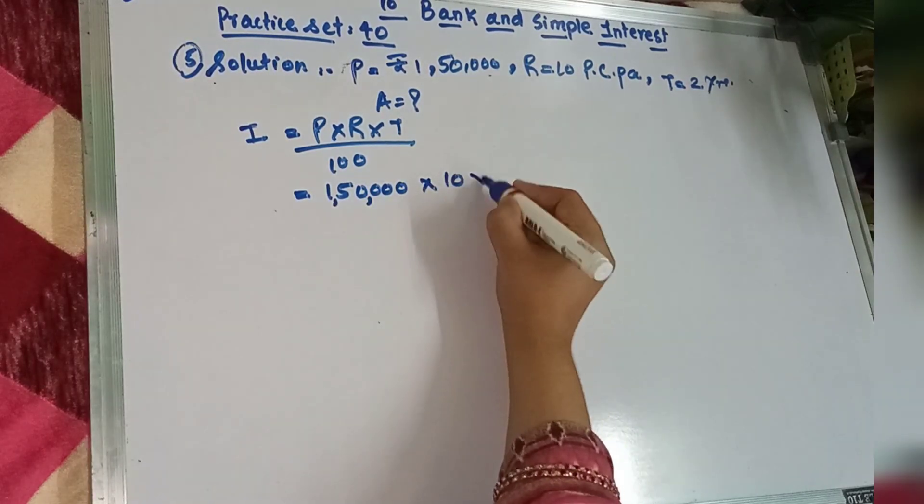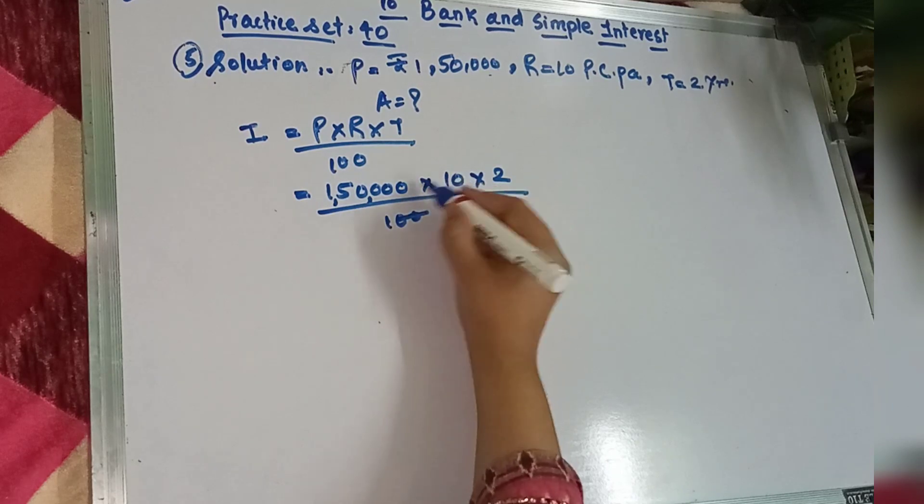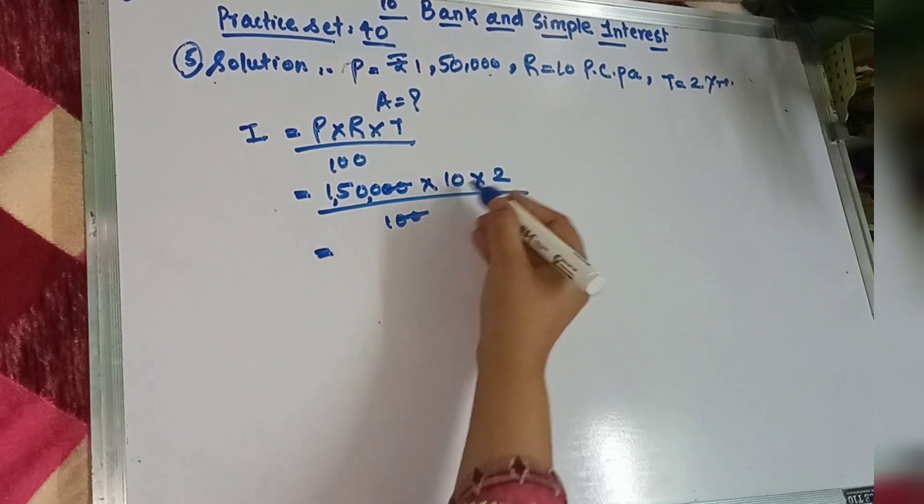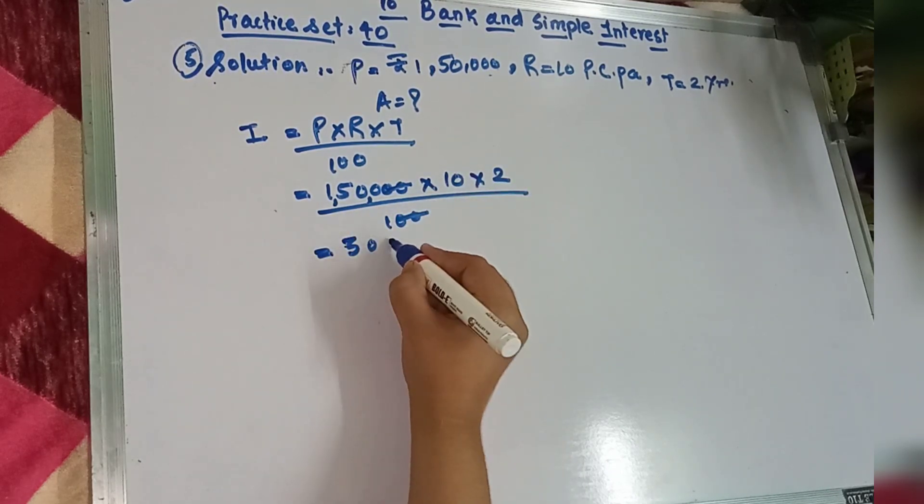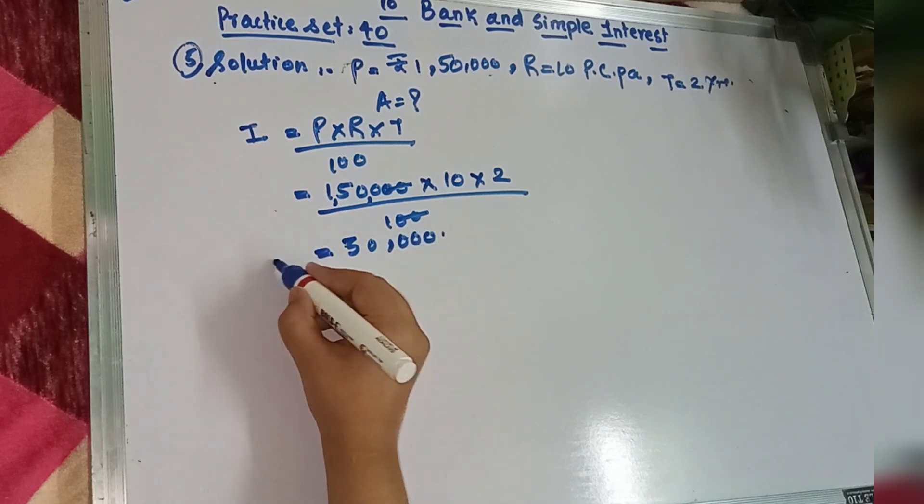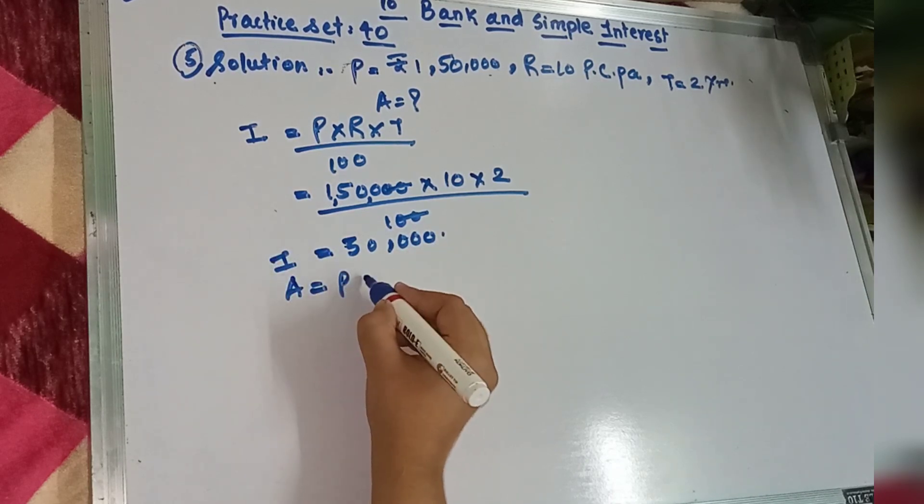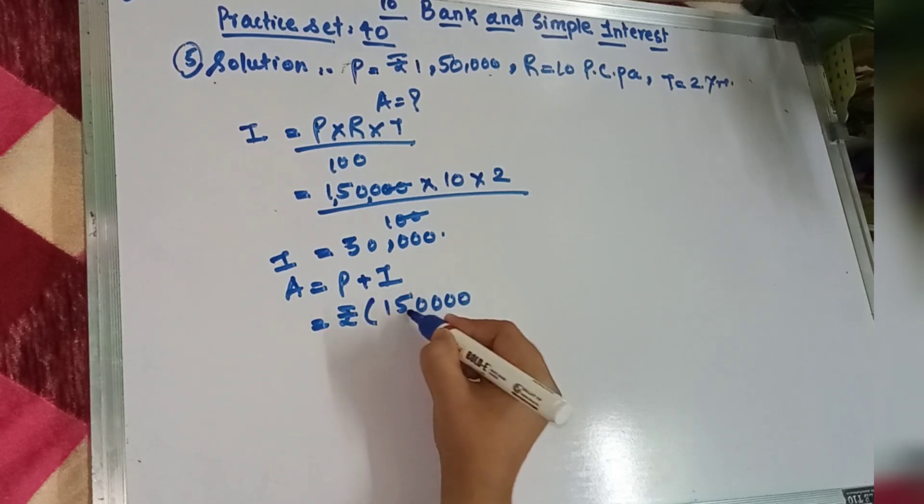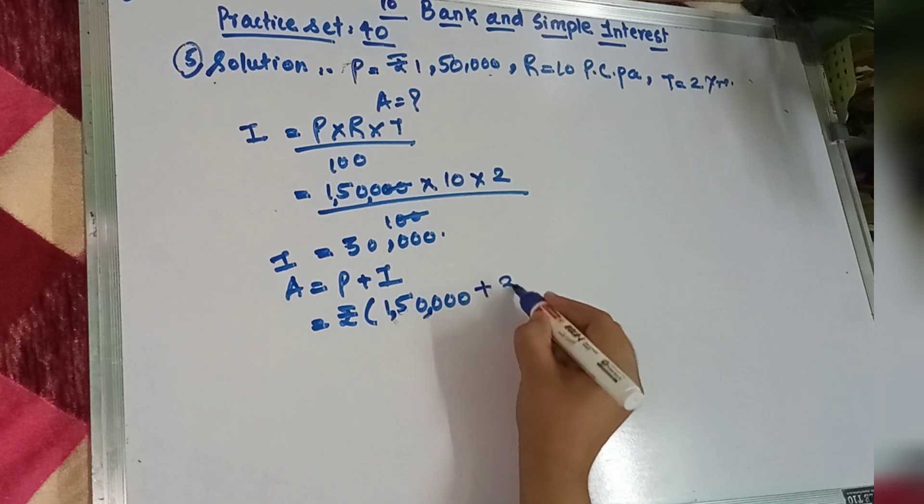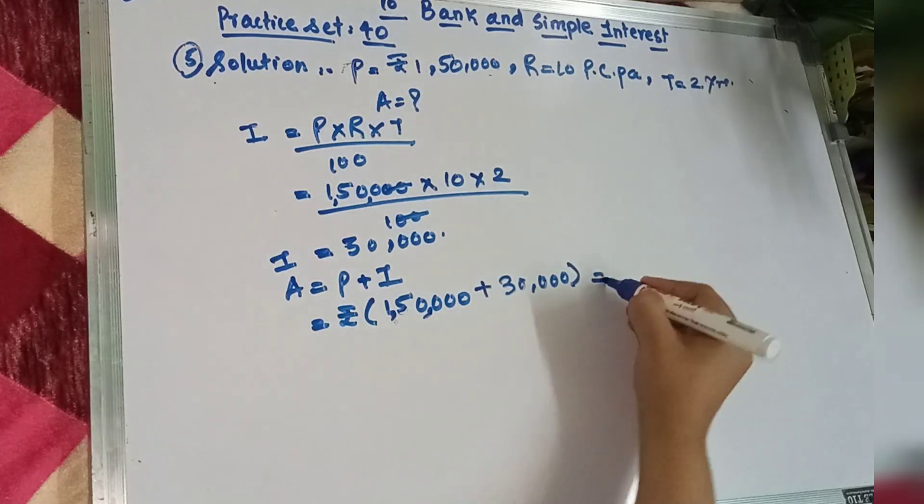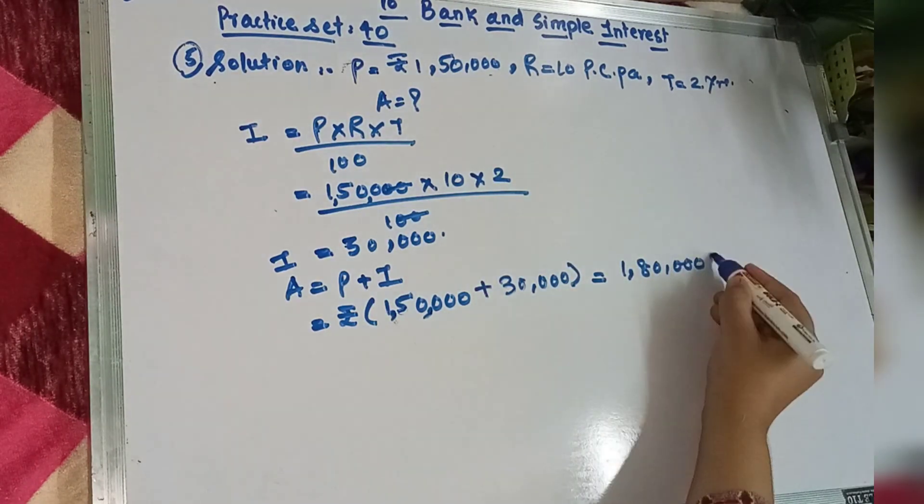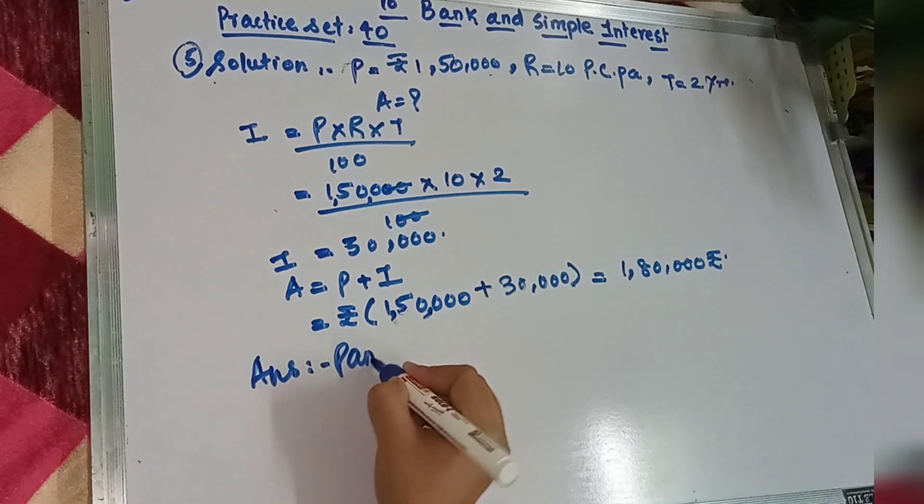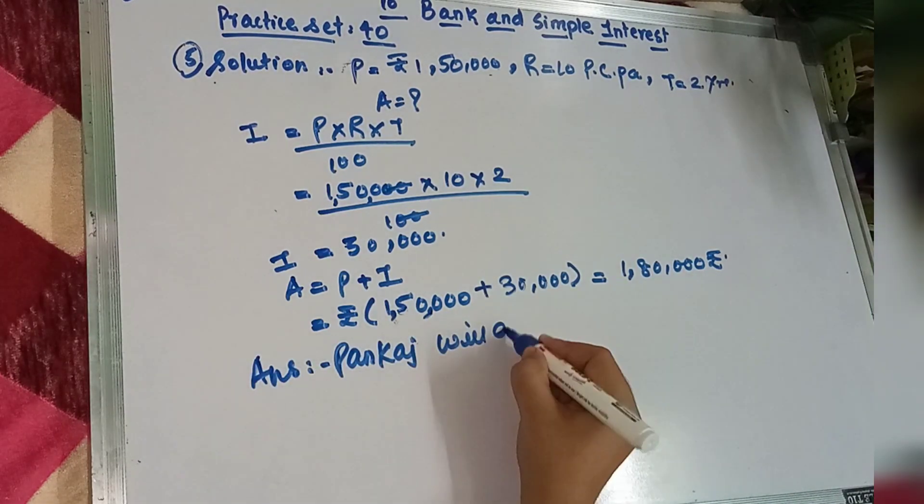Principal hamara 50,000 into 10, time diya humko 2 years upon 100. Double zero upar ke 50,000 ke double zero se cancel ho jayega, iska answer aayega 30,000. Amount ka formula hai A is equal to P plus I. Principal hamara yahan par 50,000 plus 30,000 aur iska answer aayega 1,80,000. Pankaj will get 1,80,000.